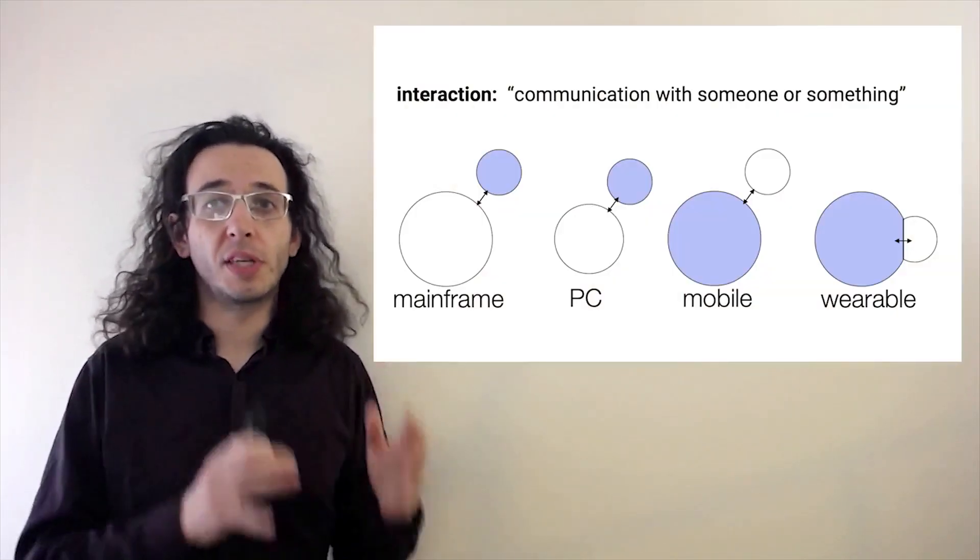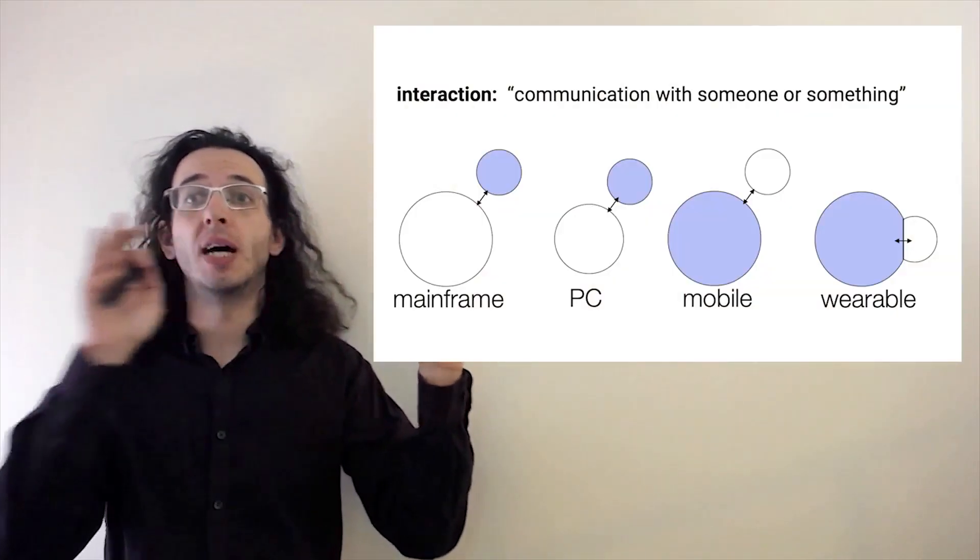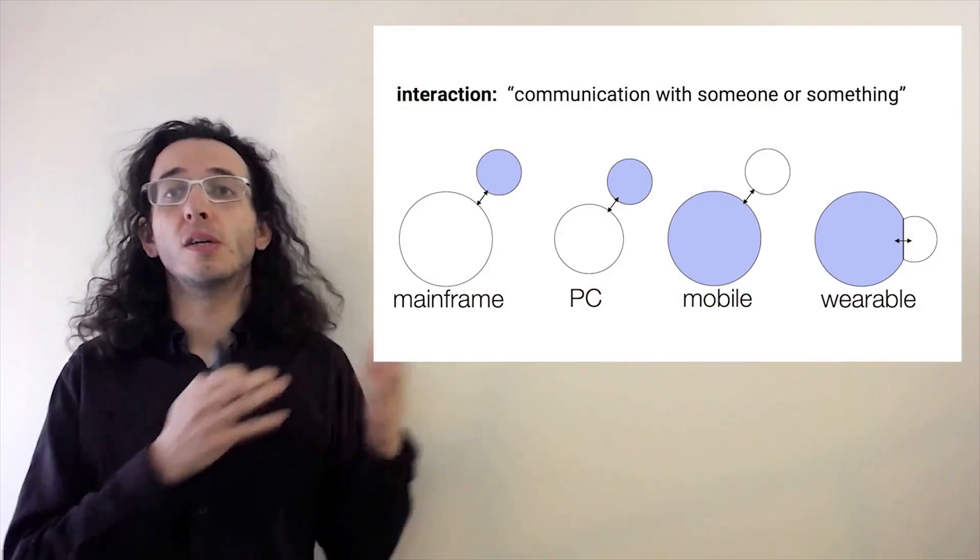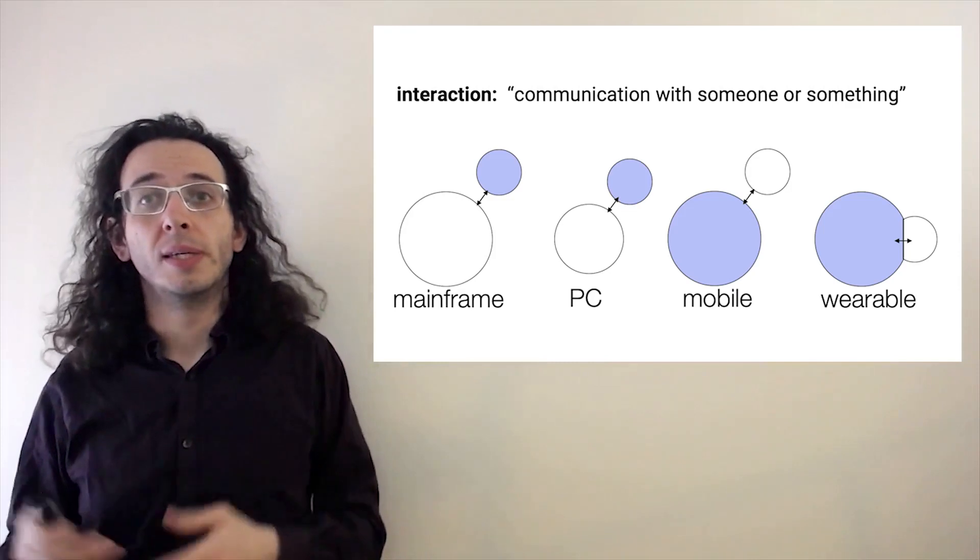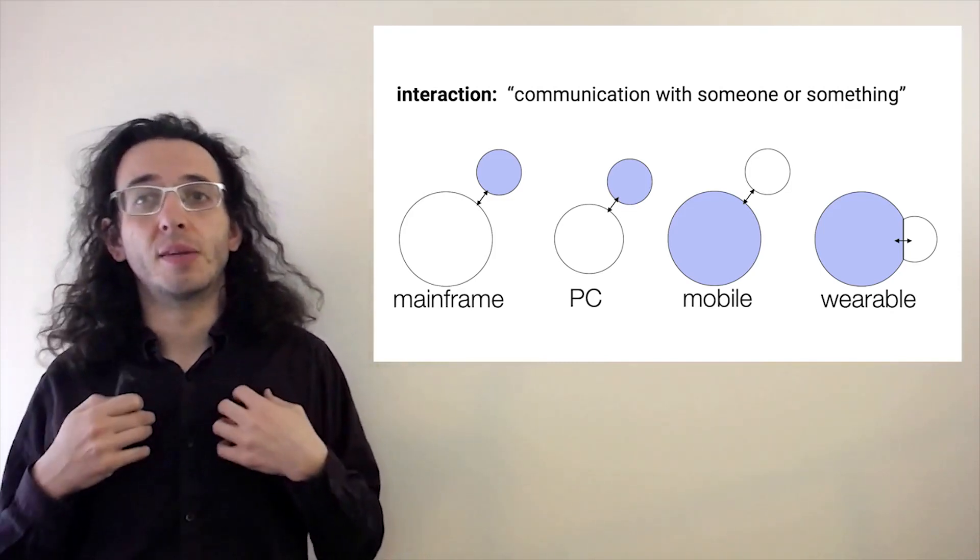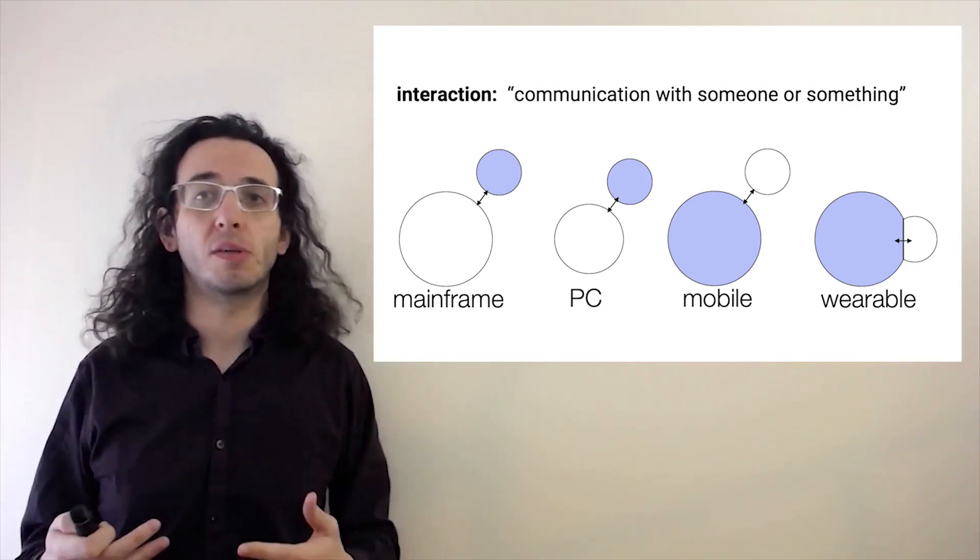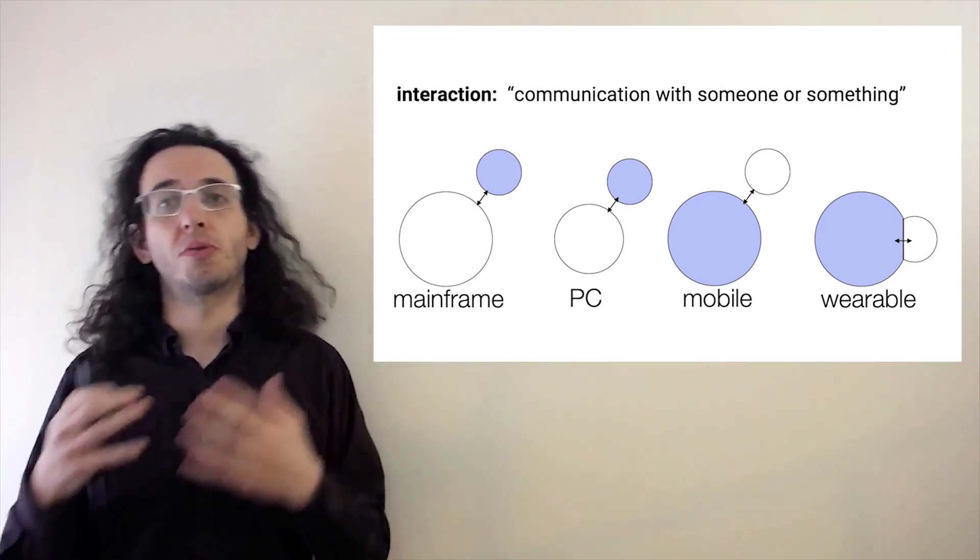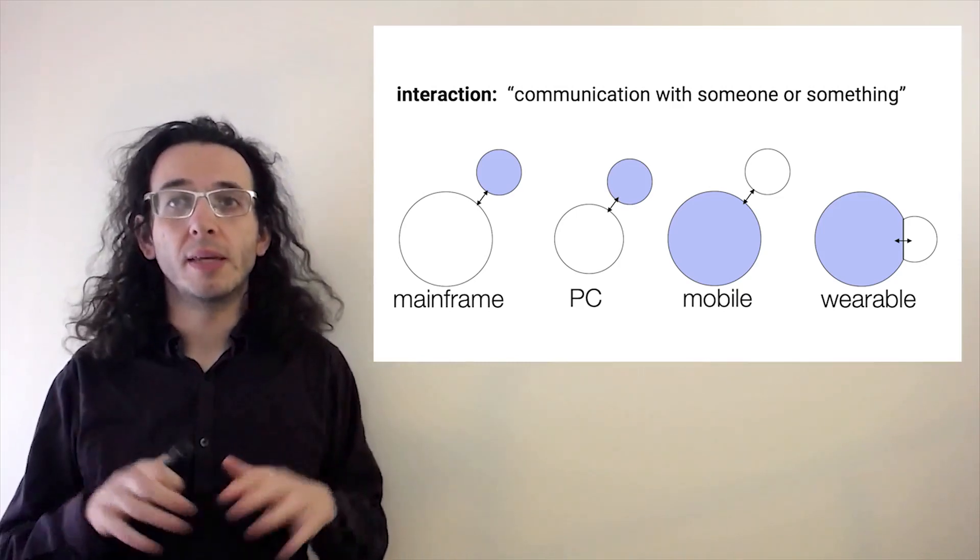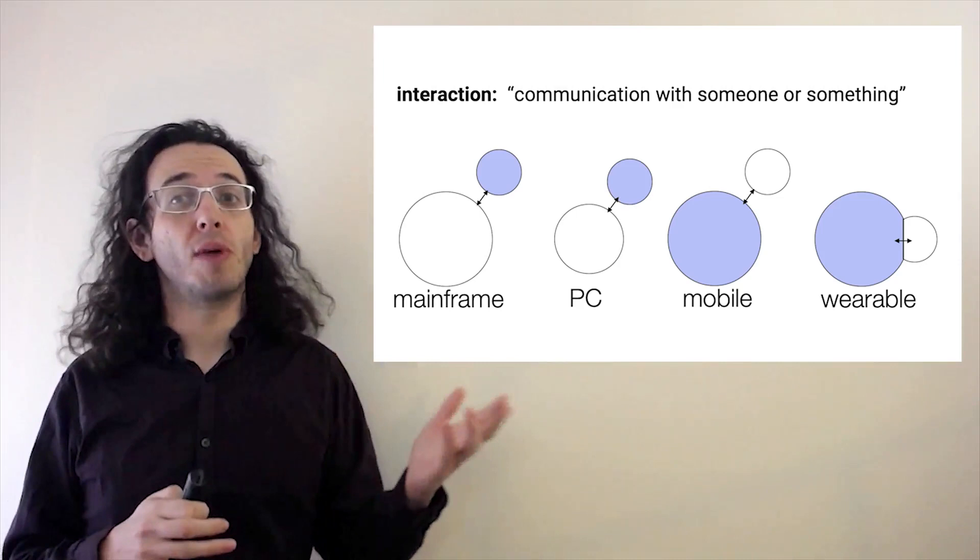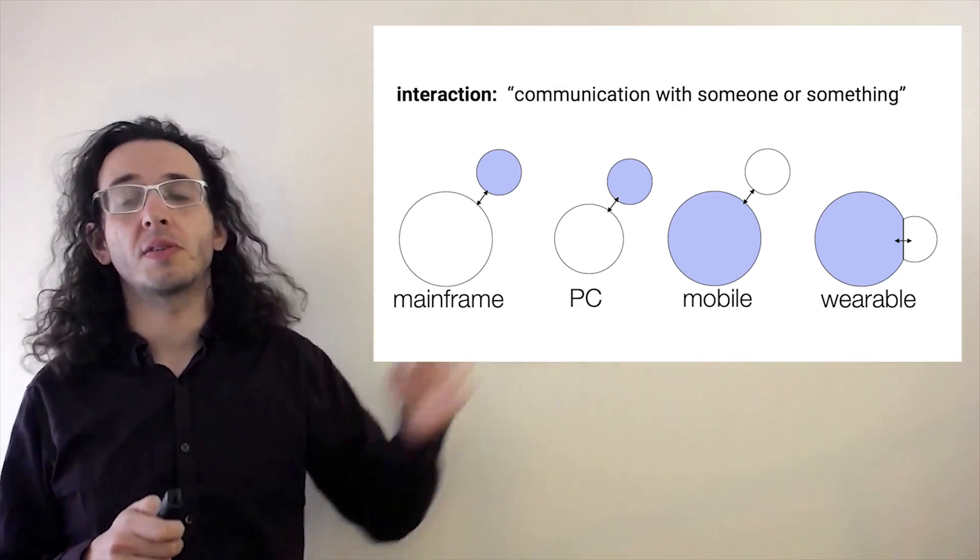Now this way of thinking of the letter I in HCI as interaction is very powerful and it draws on the very definition of the word, communication with someone or something. And it's precisely that that we as researchers are often optimizing. We're optimizing the speed of the communication, the bandwidth of the communication between the user and the device.